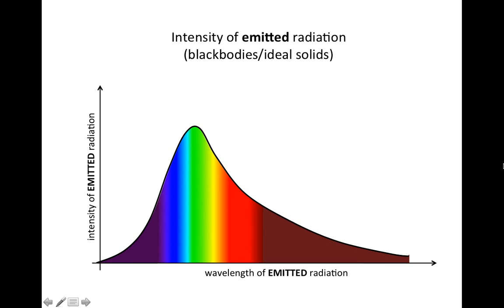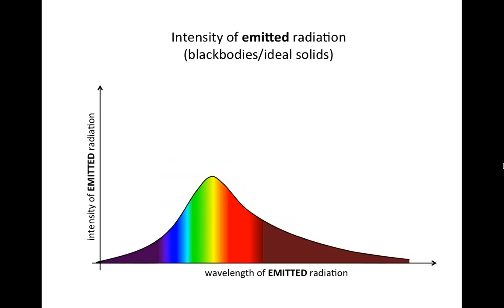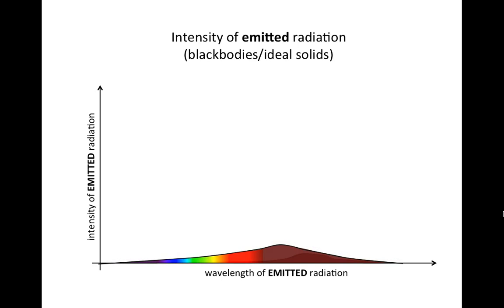If the object is cooler, it emits less radiation. So there's less intensity, and it's primarily in the yellow range. Even cooler is like this. Cooler like this. And objects like the seat of your car, they only emit infrared. That's how cool they are.